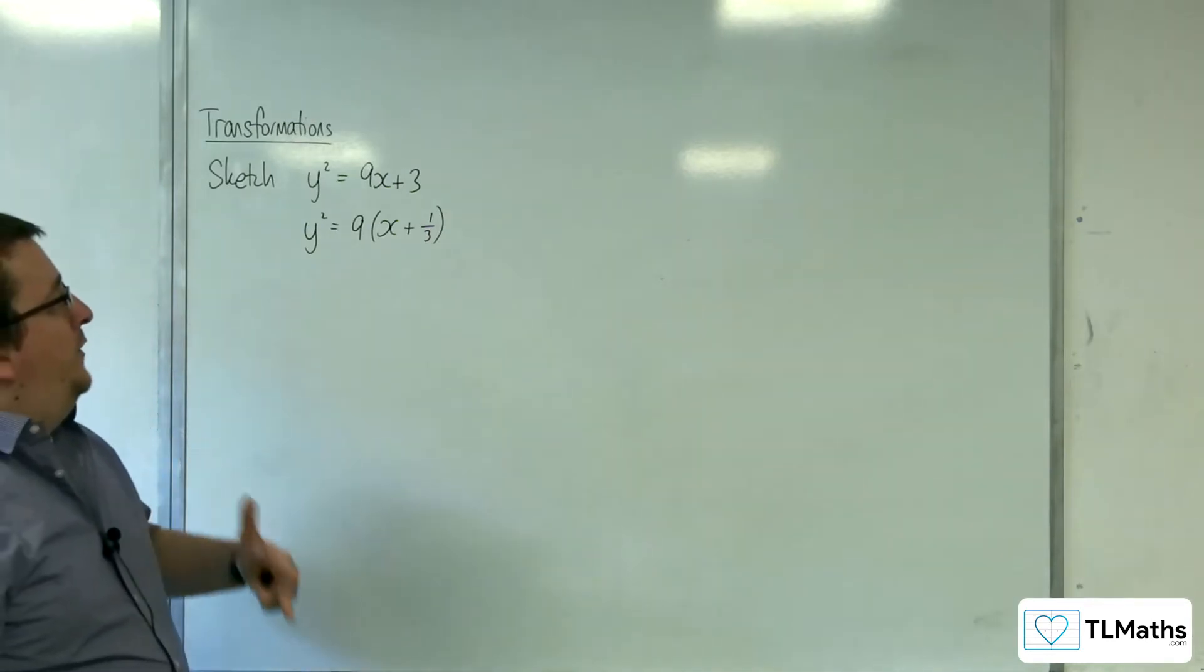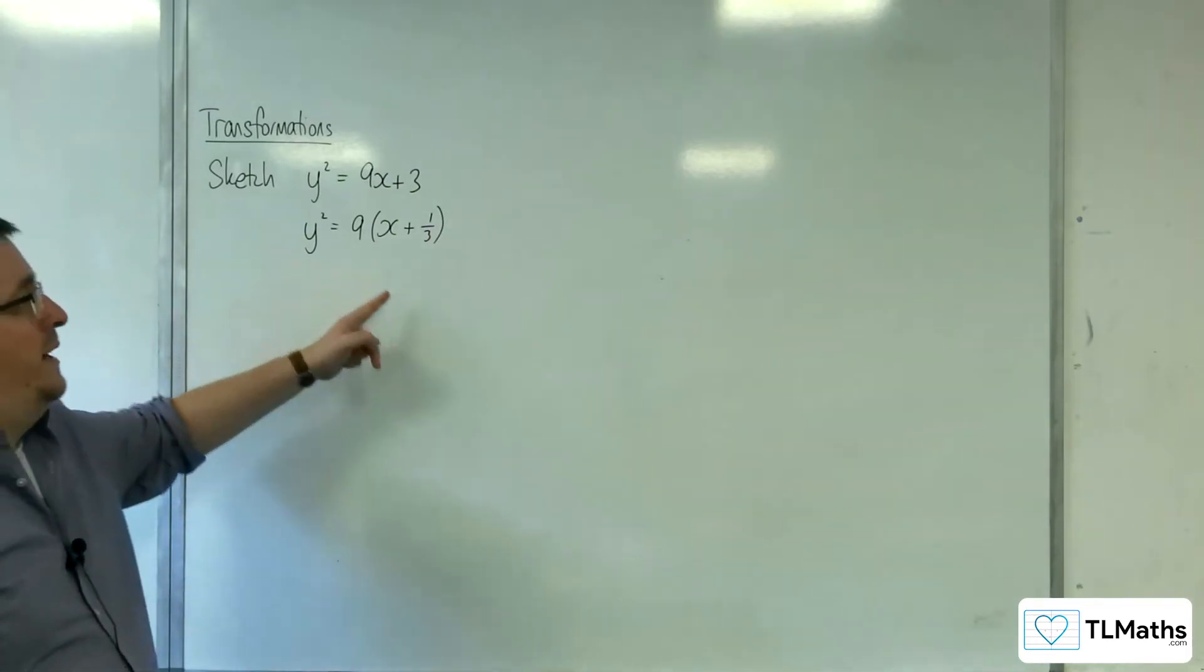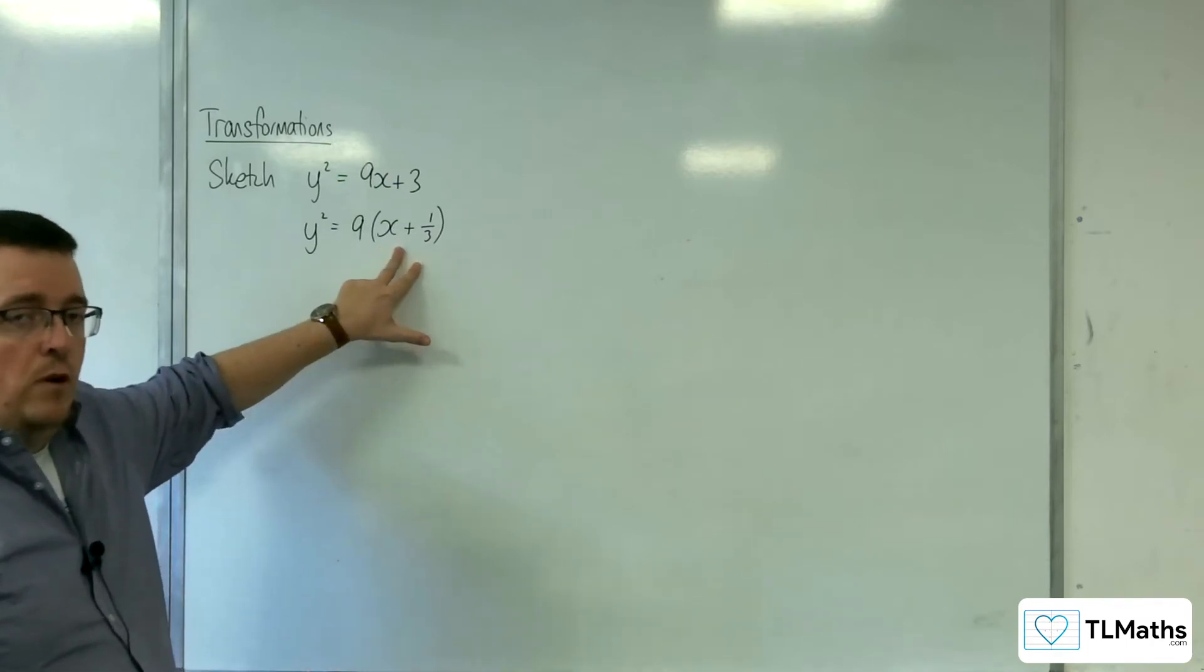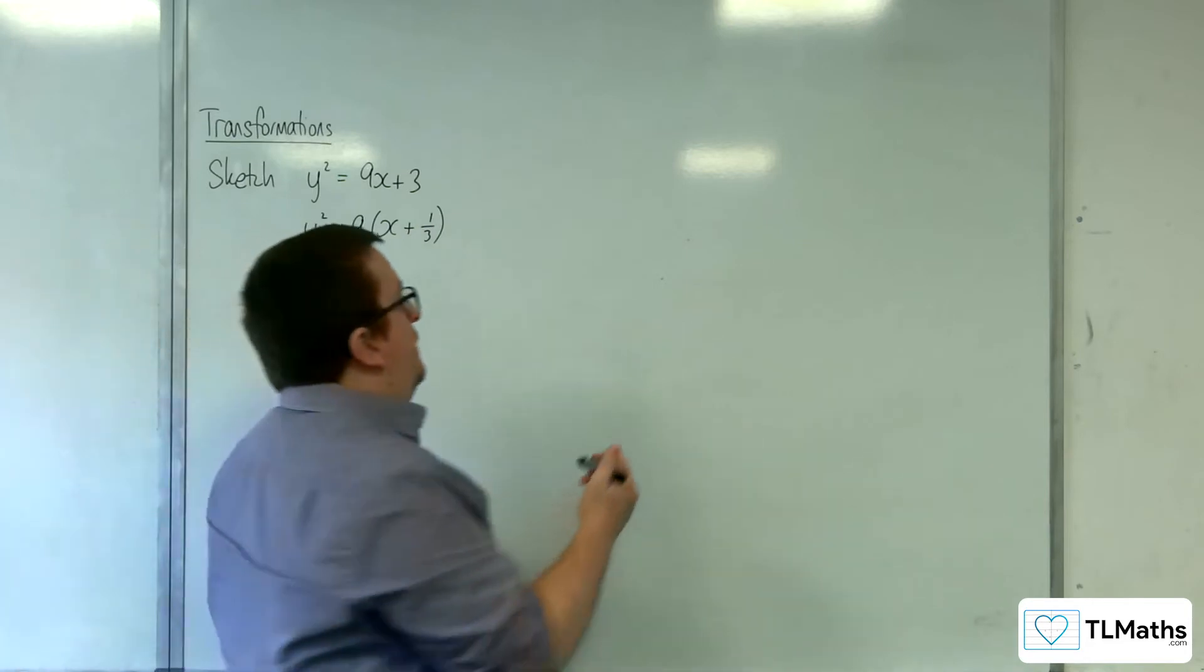Because now I can see that this is a translation of y squared equals 9x by the vector minus 1 third 0. So it's translating the graph a third to the left.